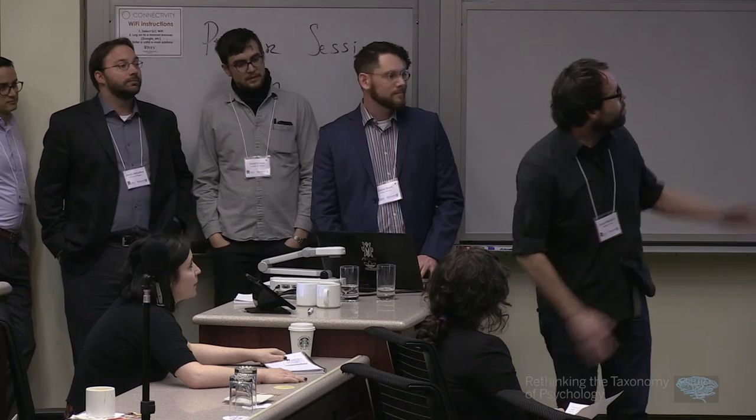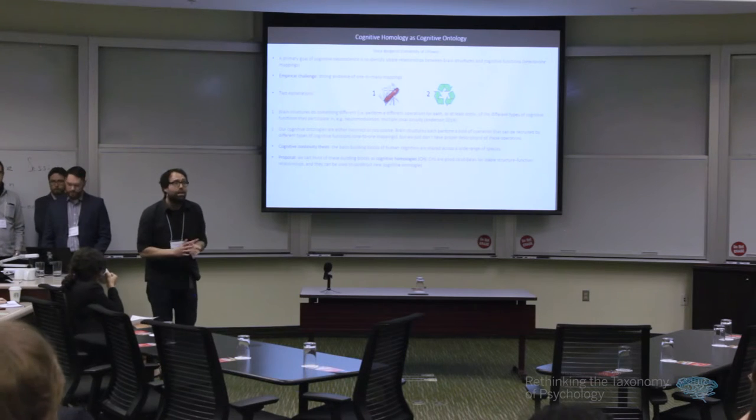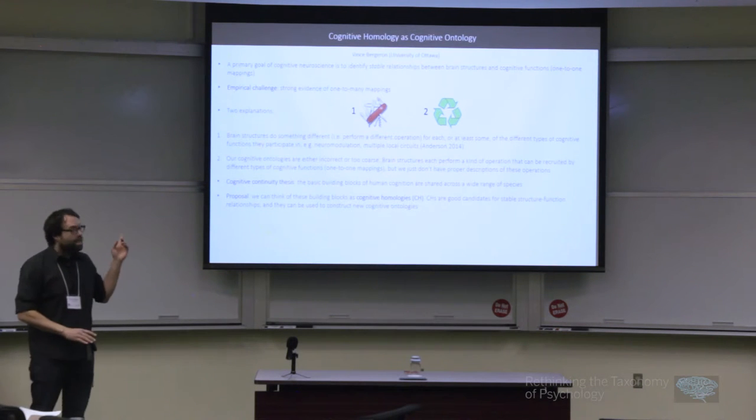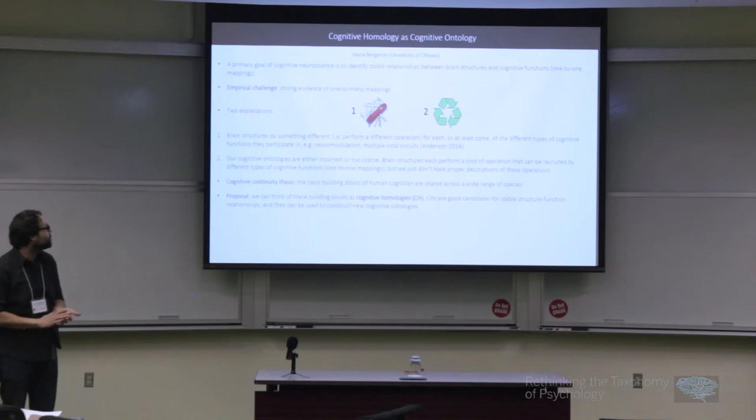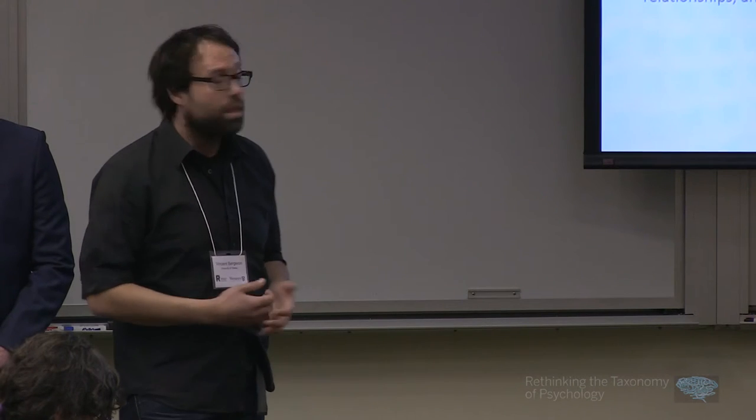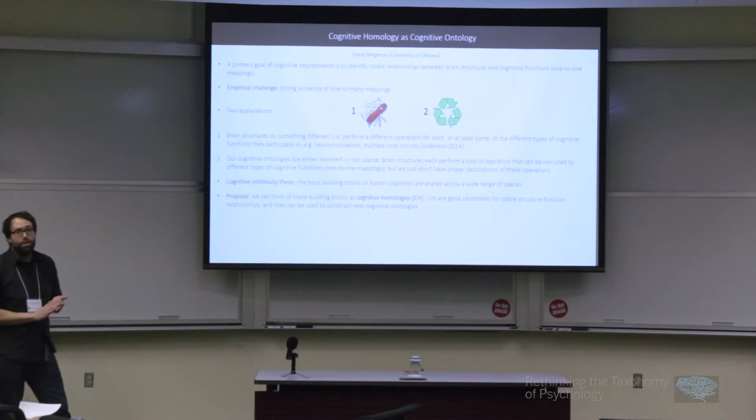We've been talking about finding these stable or selective structure-functional relationships, ideally one-to-one mappings. Instead, what we found is strong evidence of one-to-many mappings. Here are two main explanations: First, brain structures do something different—different operations locally for each or at least some of the different types of cognitive functions in which they participate. Michael Anderson has argued for this view and has offered neuromodulation as a possible mechanism. The second explanation is the one I'm going to pursue in the poster: our cognitive ontologies are either incorrect or too coarse. Brain structures might each perform a kind of operation that can be recruited by different types of cognitive functions.